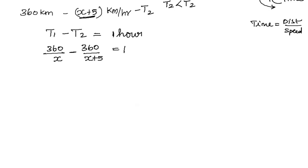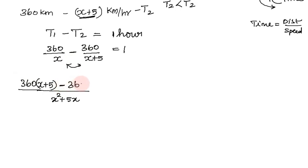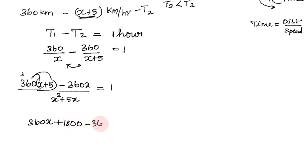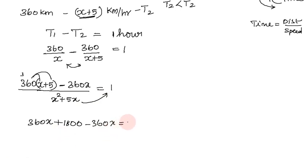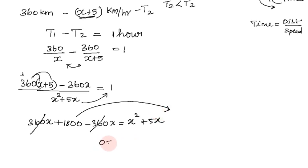Simplifying by cross multiplication: 360 times (x plus 5) minus 360x divided by x squared plus 5x equals 1. Expanding: 360x plus 1800 minus 360x over x squared plus 5x. The 360x terms cancel, giving 1800 divided by x squared plus 5x equals 1. Therefore x squared plus 5x minus 1800 equals 0.